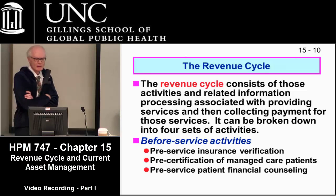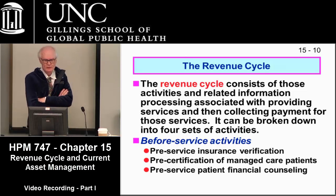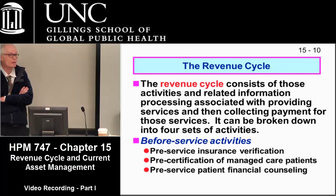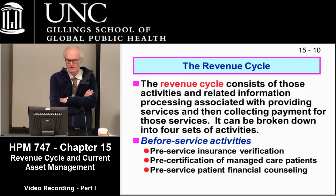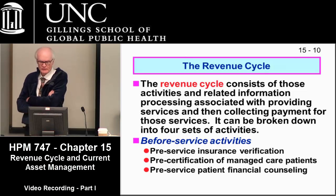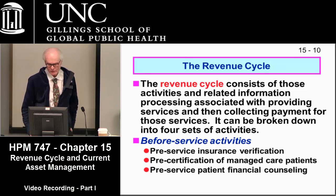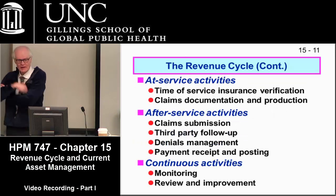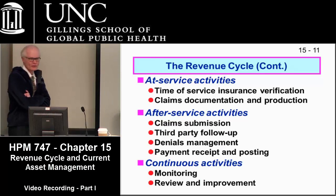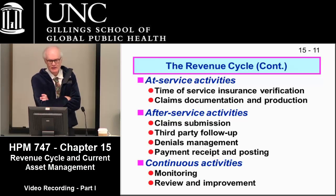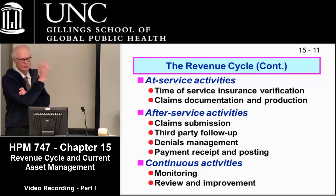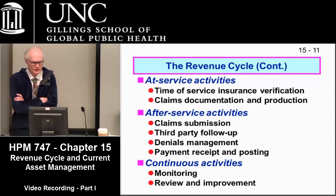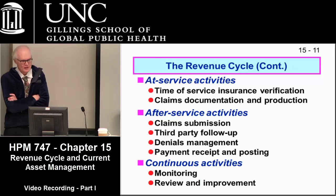Revenue cycle, as Robbie described, is generally broken into three categories. Pre-service includes insurance verification — phoning the insurance company or Medicare to confirm the patient is covered — and financial counseling to explain the financial consequences of accessing care. At-service includes insurance verification on the day of service, since patients sometimes lose insurance between pre-service and the appointment, plus claims forms. Post-service includes claim submission and denials management.